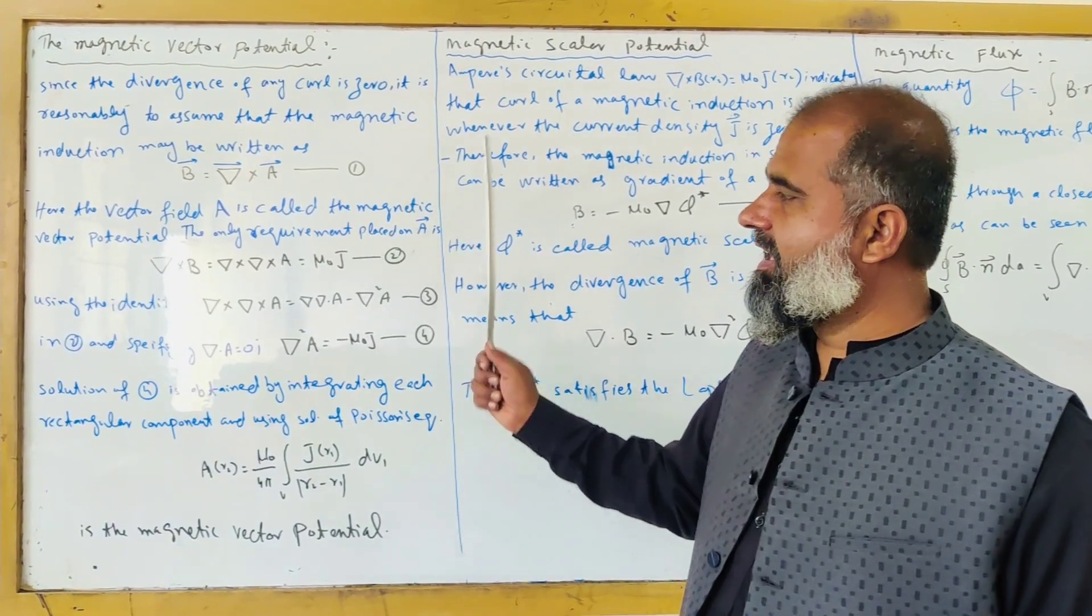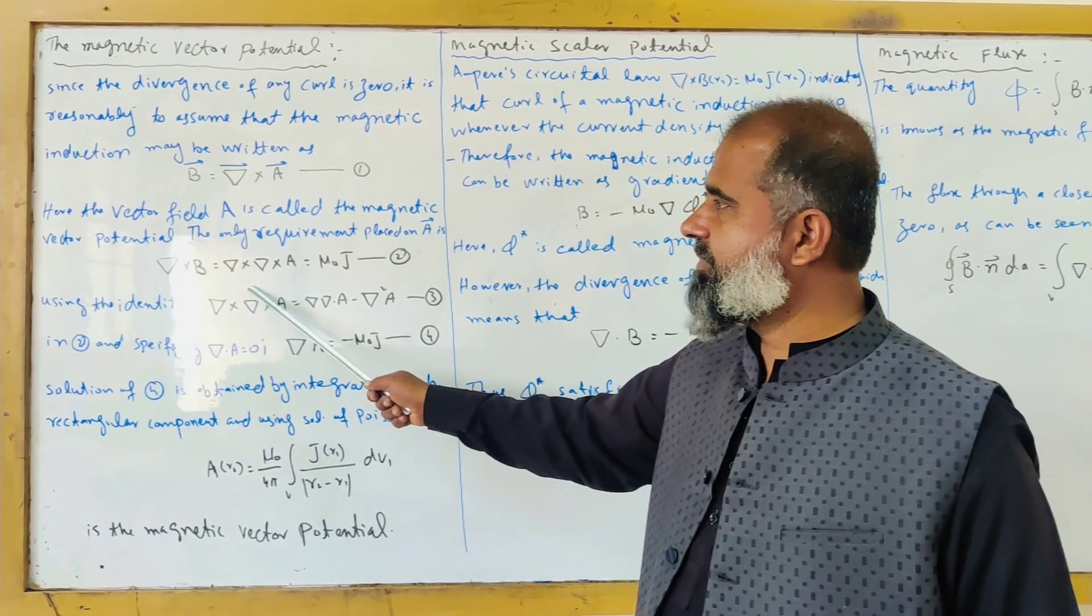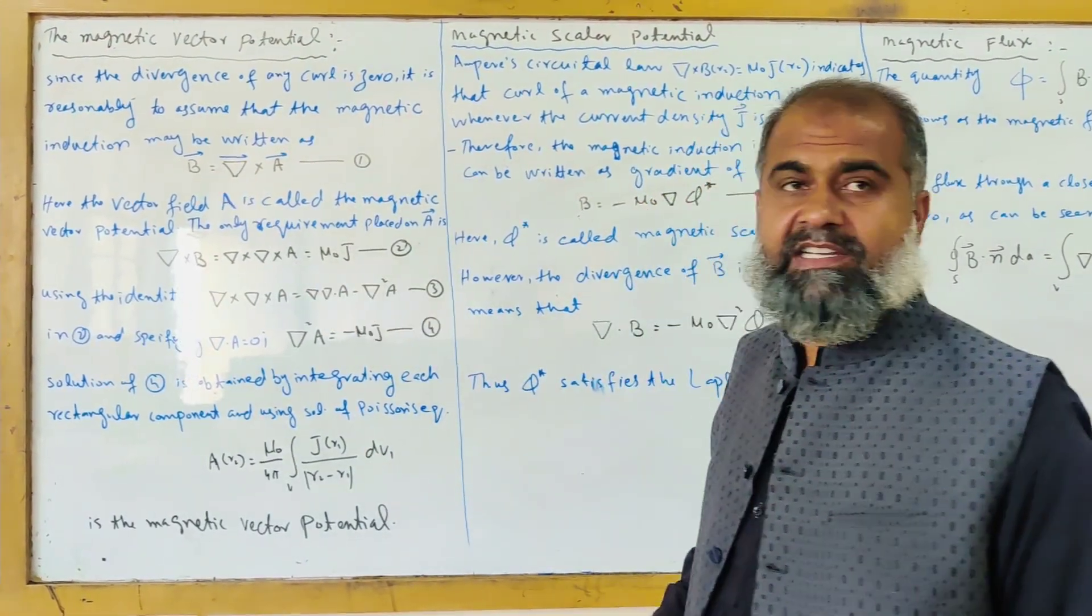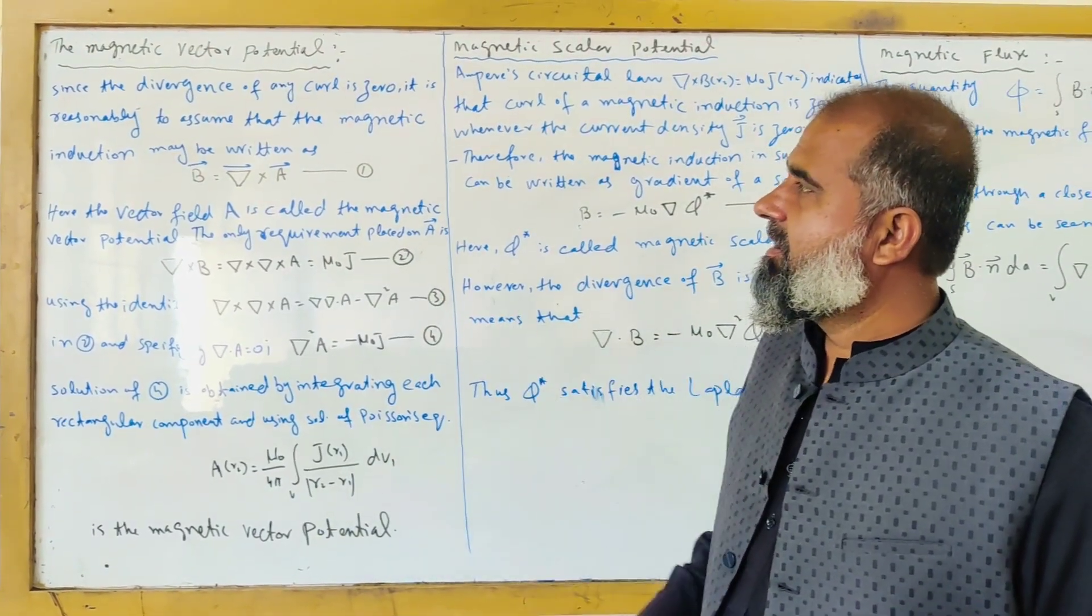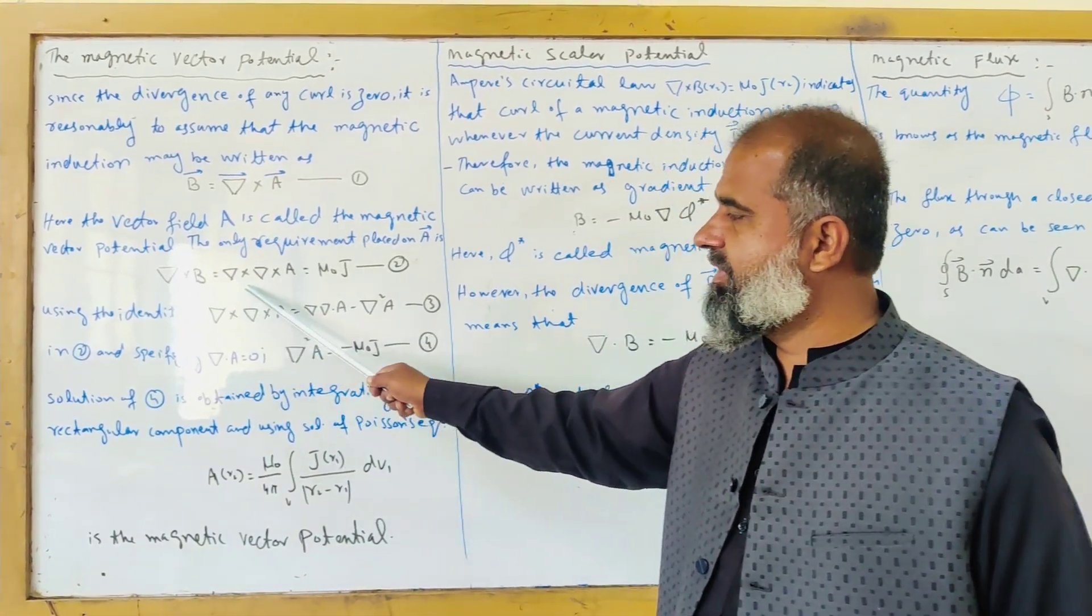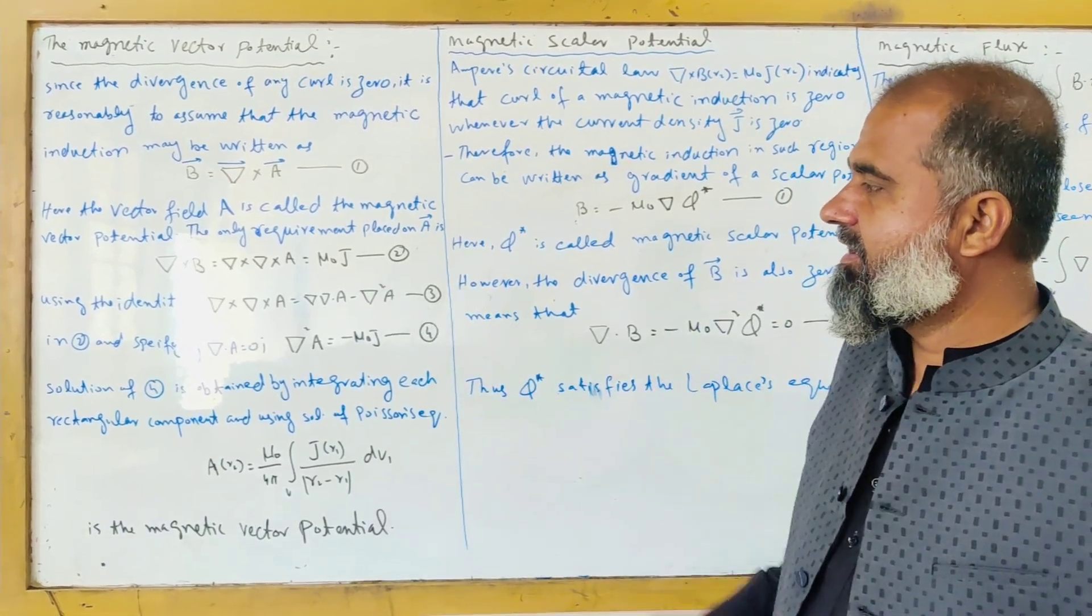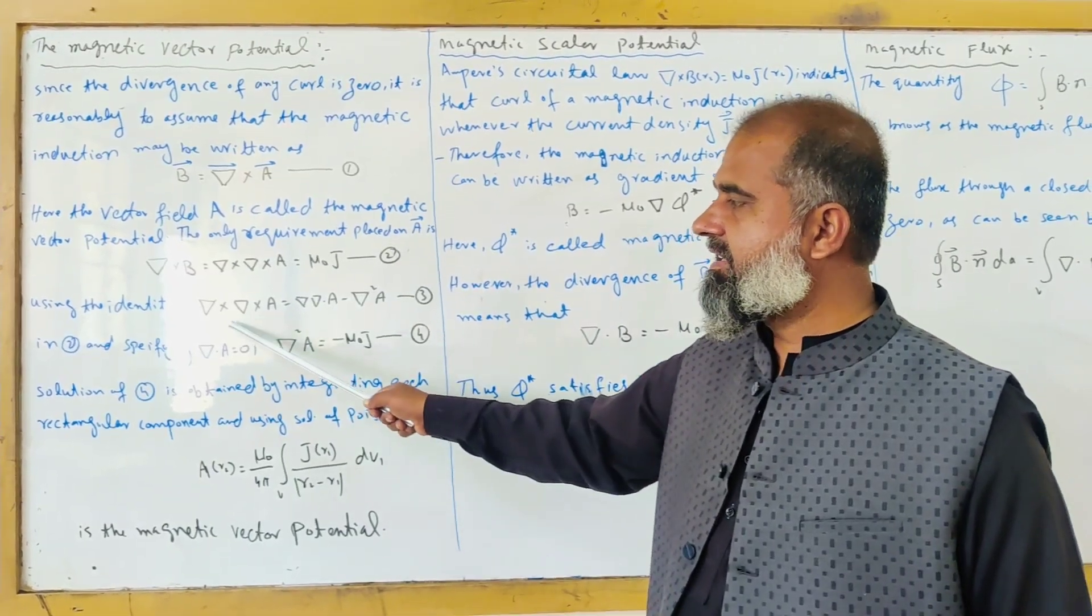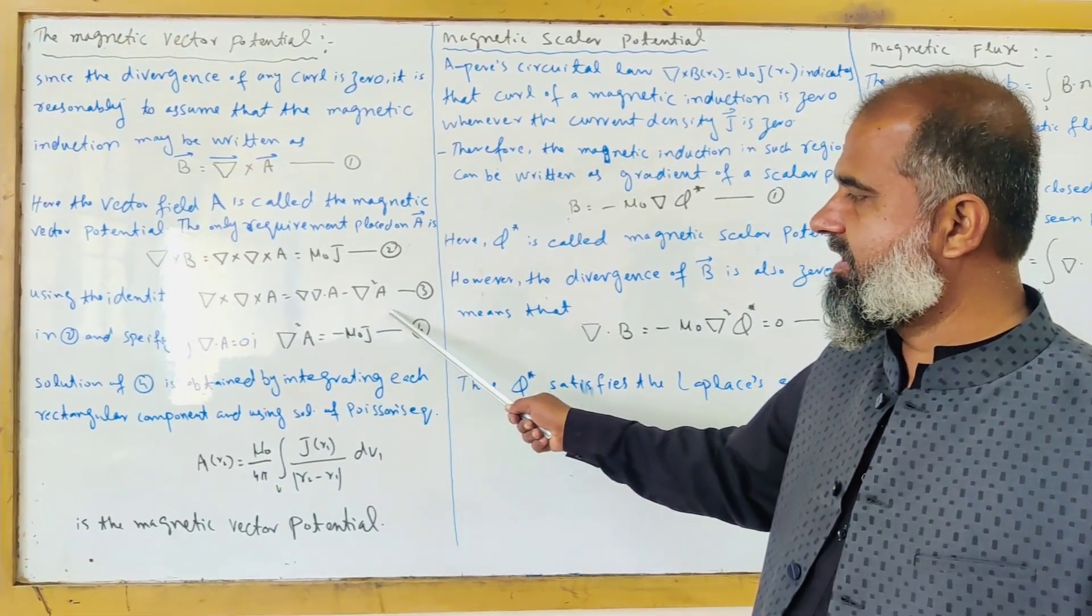We have a requirement that del cross B - if you take the curl of this magnetic induction field - since we are dealing with the magnetic vector potential, we take the curl of B. Del cross B equals del cross del cross A equals mu naught J. This is equation 2. We use the identity that del cross del cross A equals del del dot A minus del square A.